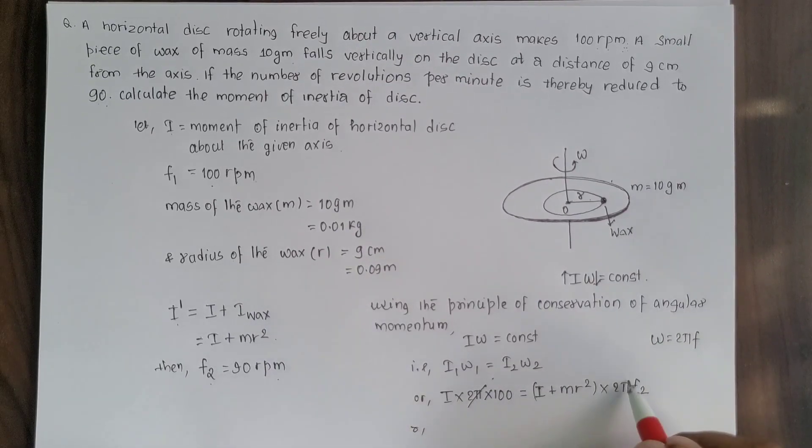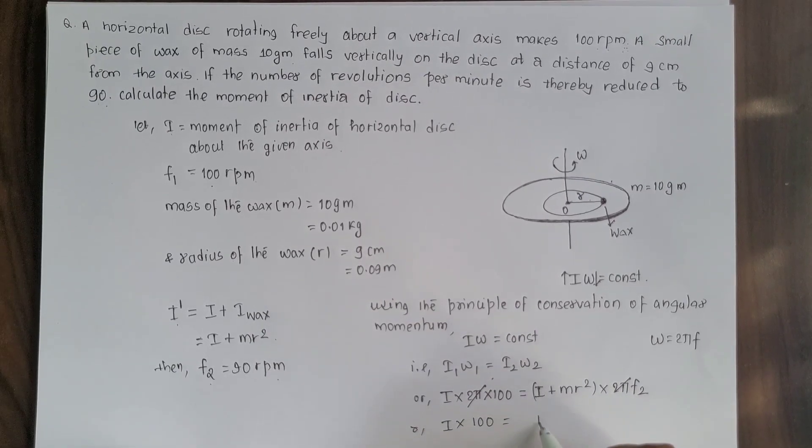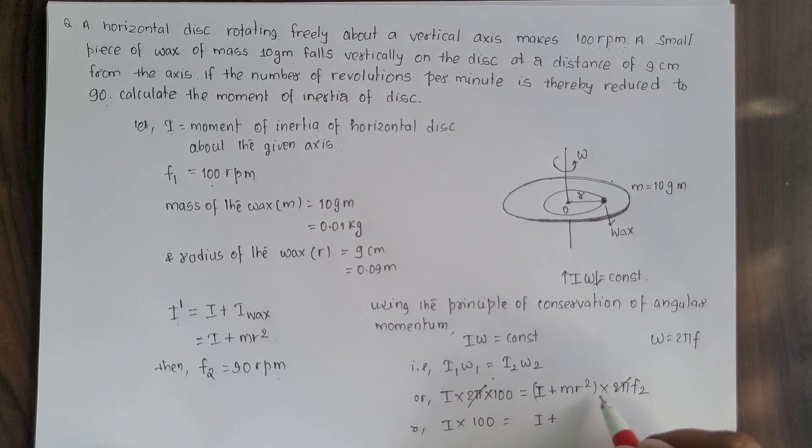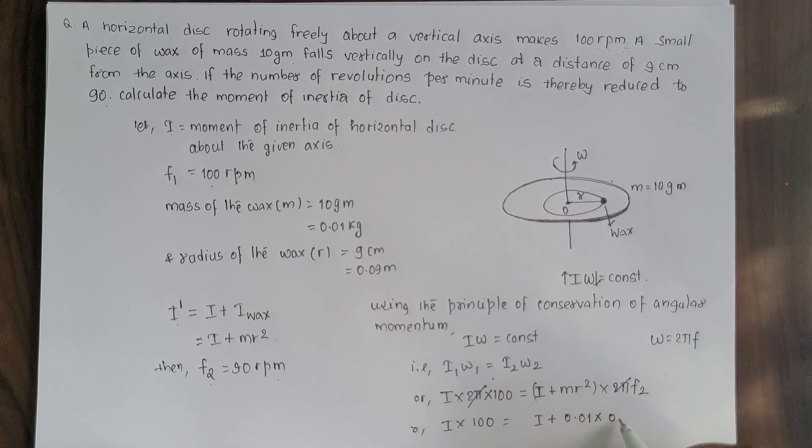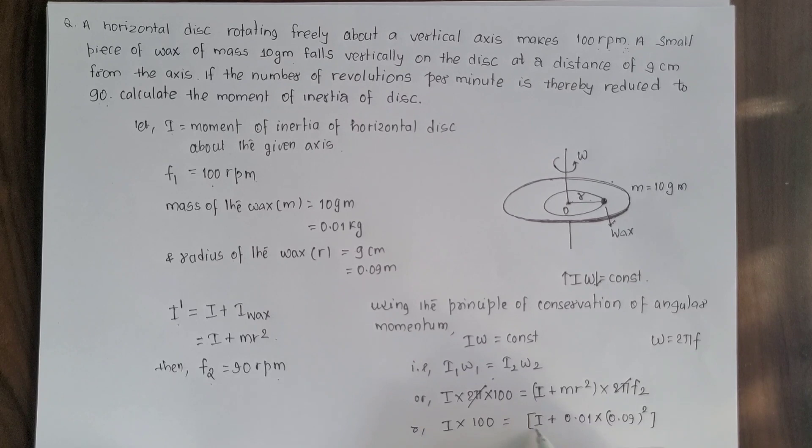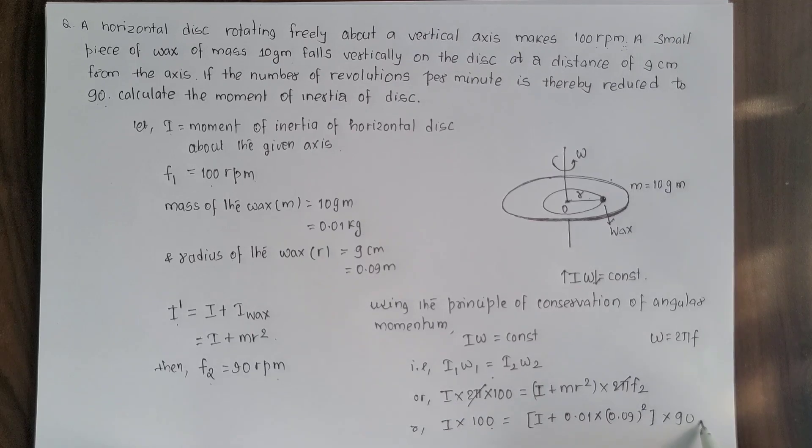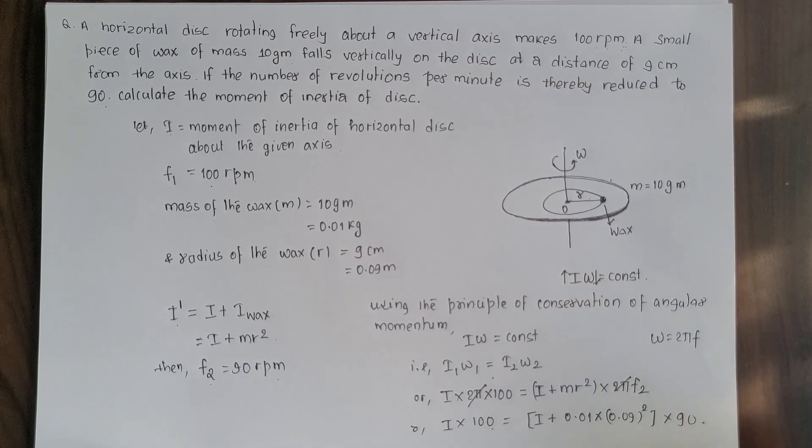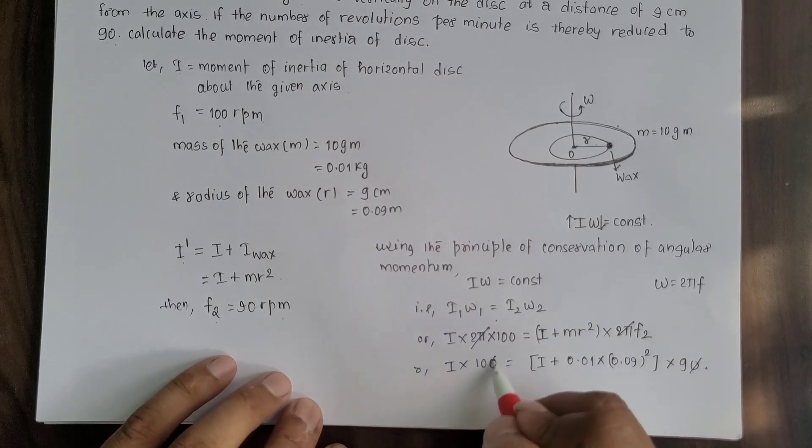2π cancels out. I times 100 equals I plus mr squared, where m is mass of wax 0.01 times r distance which is 0.09 squared, times f2 which is 90 revolutions per minute. In revolutions per minute unit cancels out, so no need to convert to per second. The zeros cancel out.